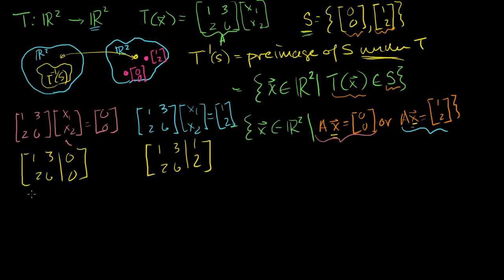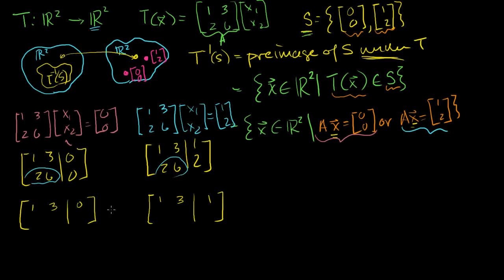Let's put these into reduced row echelon form. I'll solve these systems in parallel. The first row stays the same: 1, 3. I'm replacing the second row with the second row minus 2 times the first row. So 2 minus 2 times 1 is 0, and 6 minus 2 times 3 is 0. For the right-hand side: 0 minus 2 times 0 is 0, and 2 minus 2 times 1 is 0. We get all zeros and we're done — both augmented matrices are now in reduced row echelon form.